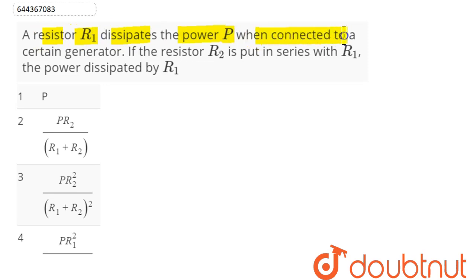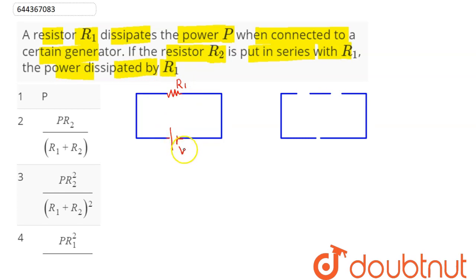the power P when connected to a certain generator. If the resistor R2 is put in series with R1, the power dissipated by R1... We can see here this is our resistor R1 connected across some generator having potential V.